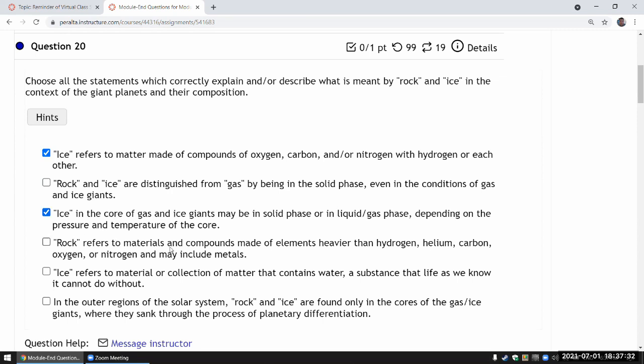Rock refers to elements heavier than hydrogen - silicate and metals. Earth is a rock planet because it's mostly made up of silicate and metals.